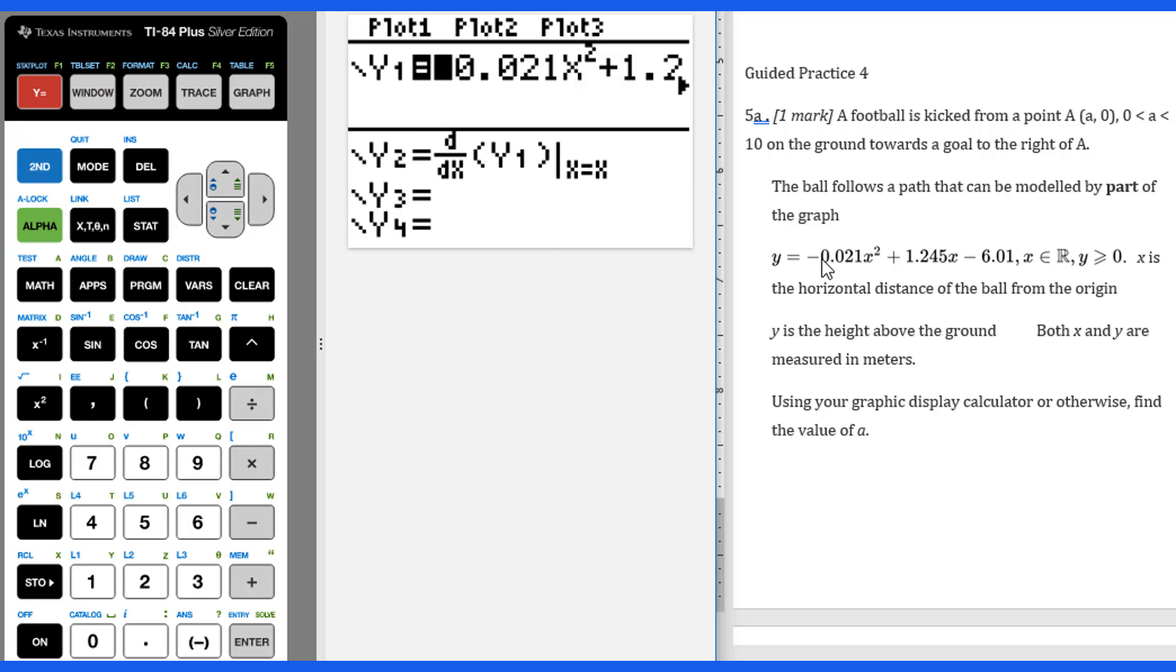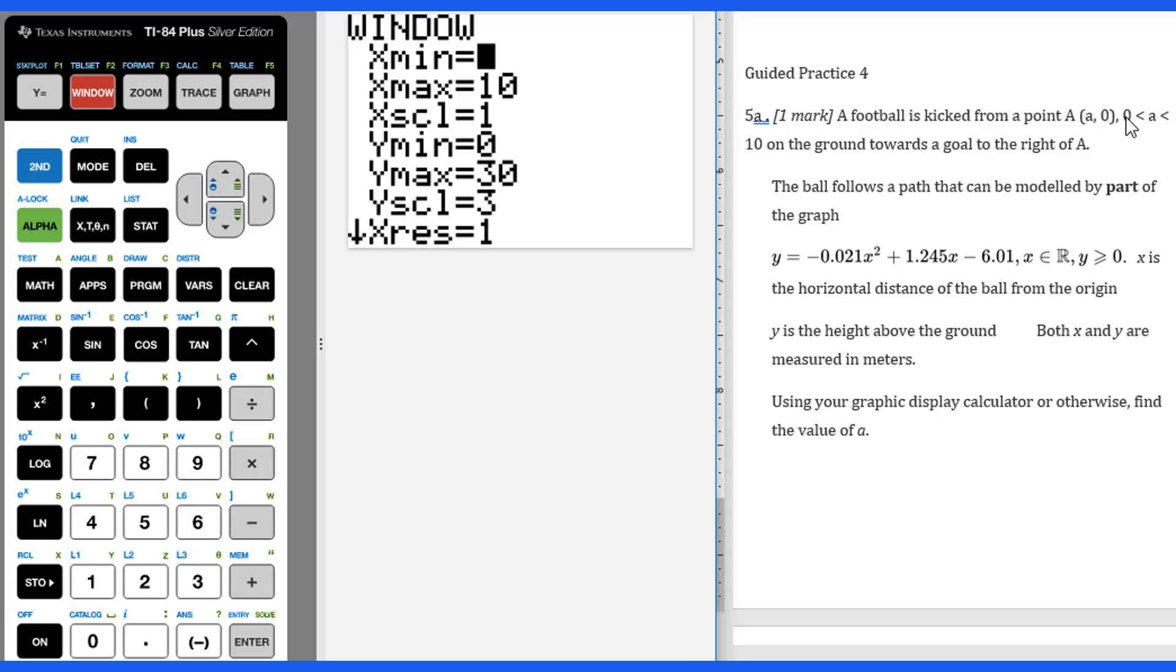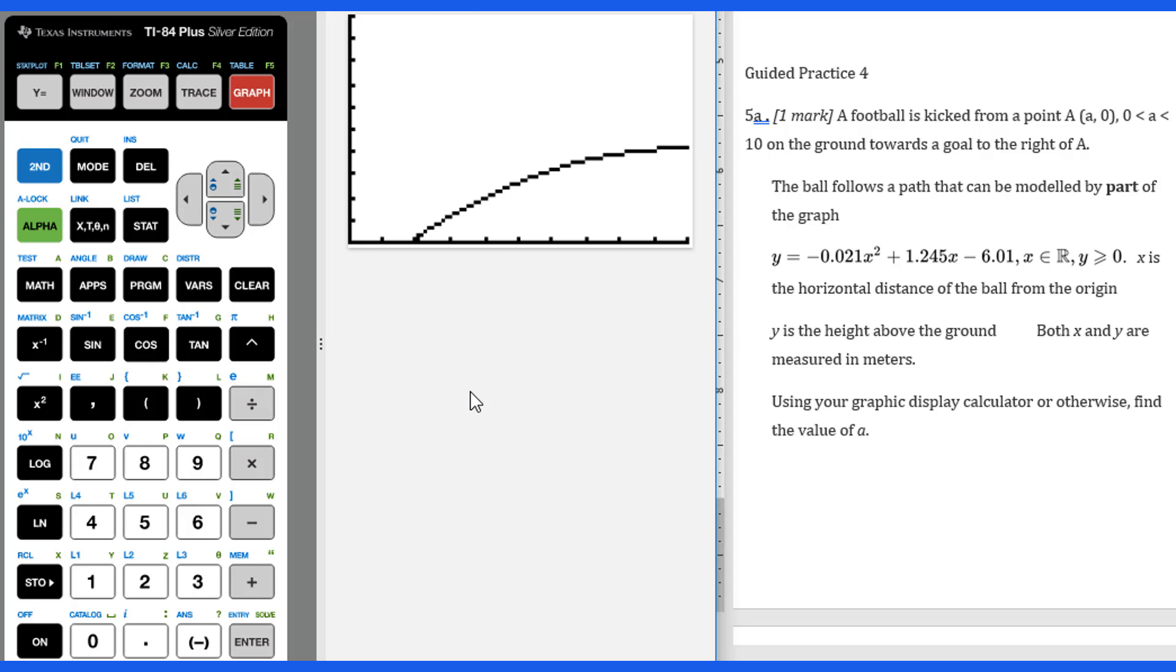First of all, we will put this function into y1, then change the window. For the window part, even though this a we know is between 0 to 10, but we know this is a quadratic function. When you sketch the graph, make sure you can see the maximum point, because this quadratic function is open down on the graph. Therefore, for the xmax, let's do 30. Just check the graph. If it's not good, we can still go back to change. So look at the graph.